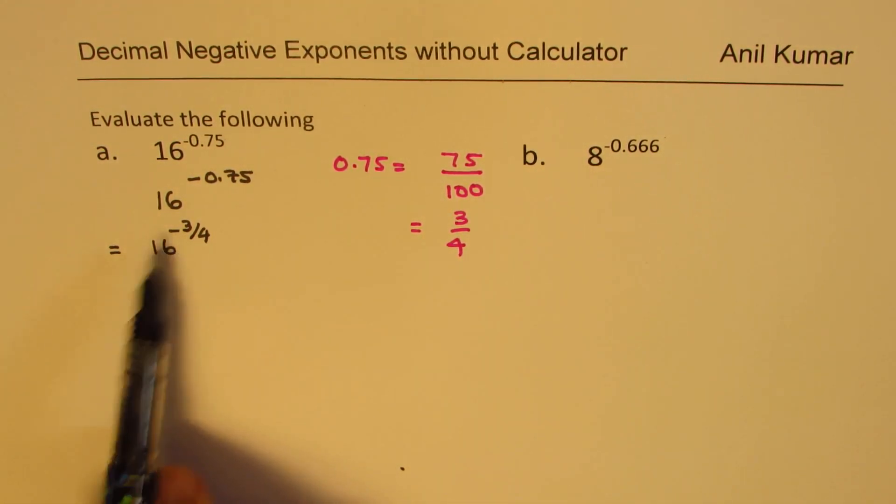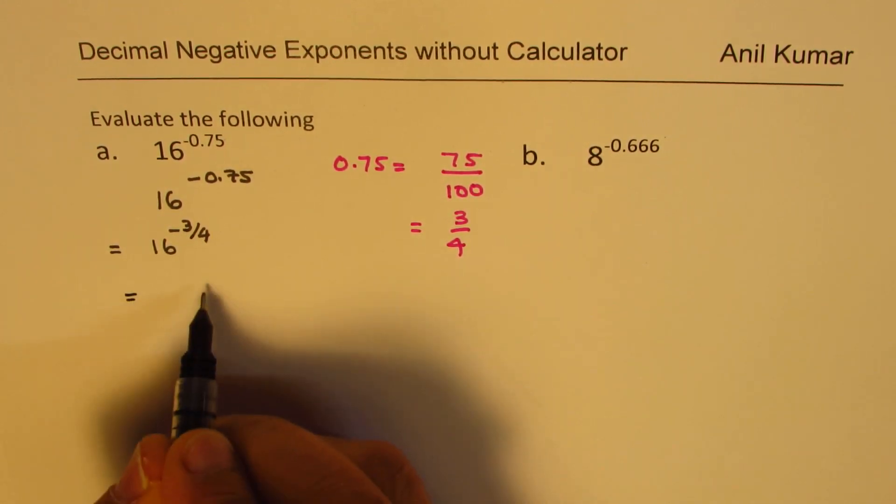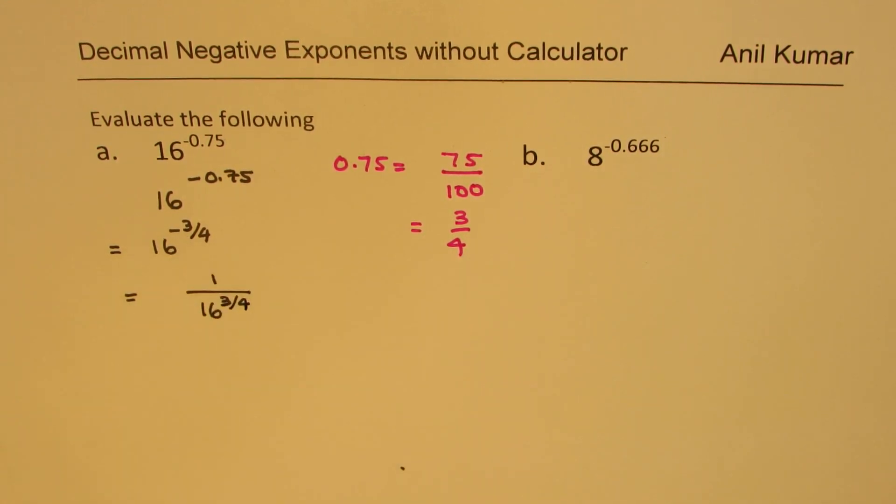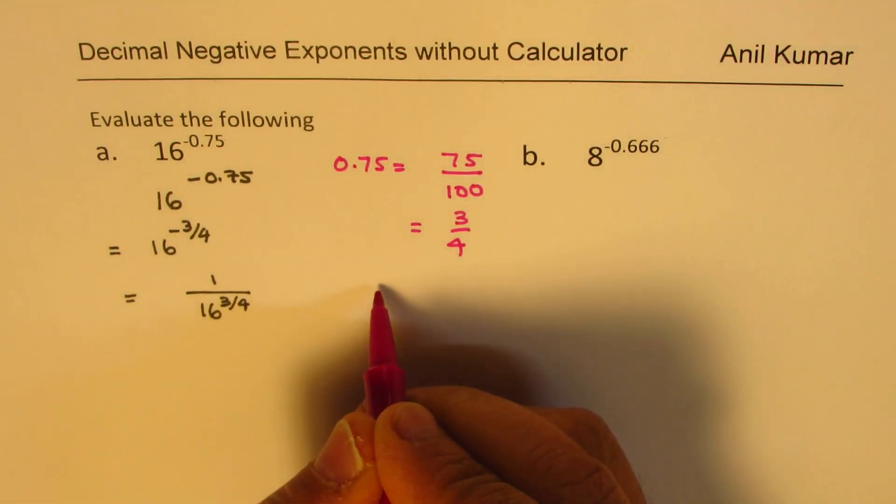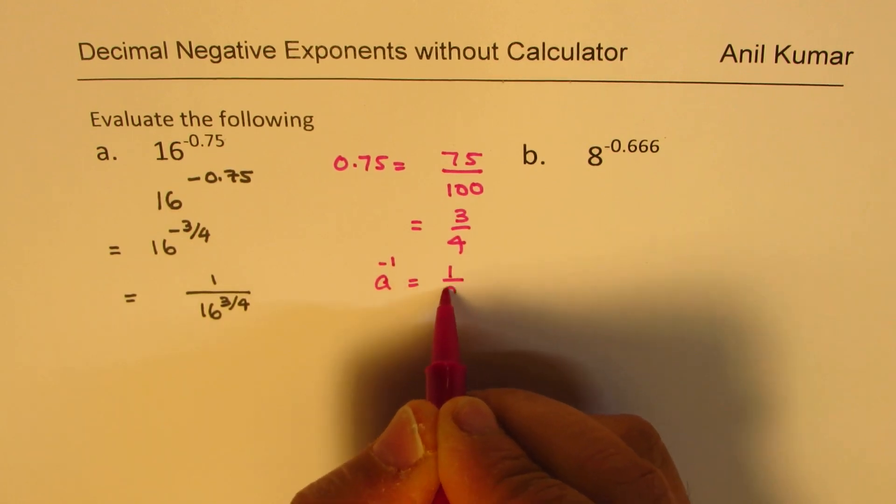Now, minus means what? Minus is reciprocal. So then you could write this as 1 over 16 to the power of 3 over 4. That is the meaning of negative exponent. If you have anything, let's say a to the power of minus 1, it really means 1 over a. So we use that property.